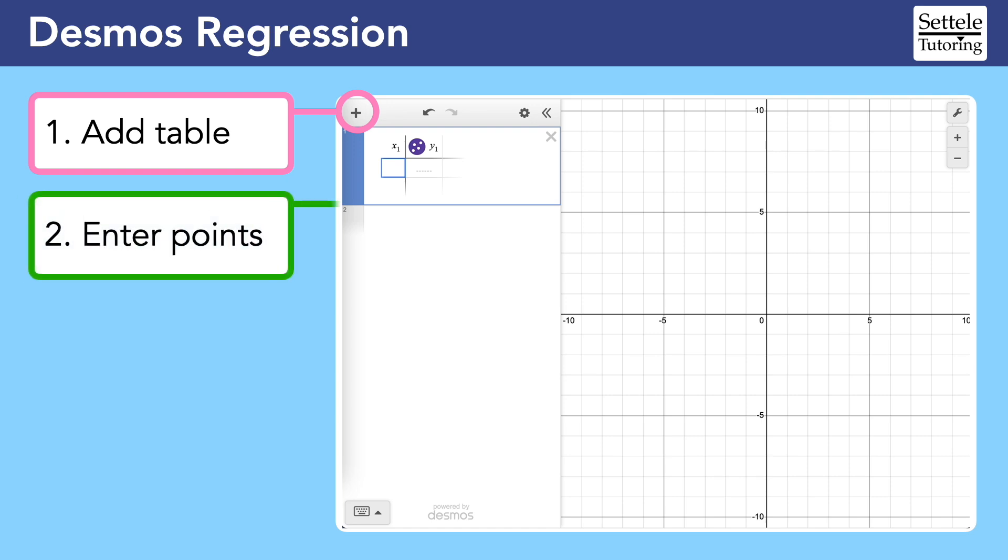Next, enter the given points in the table. The x values go in the x column and the y values go in the y column. The points should appear on the graph. Scroll or zoom to find them if needed.